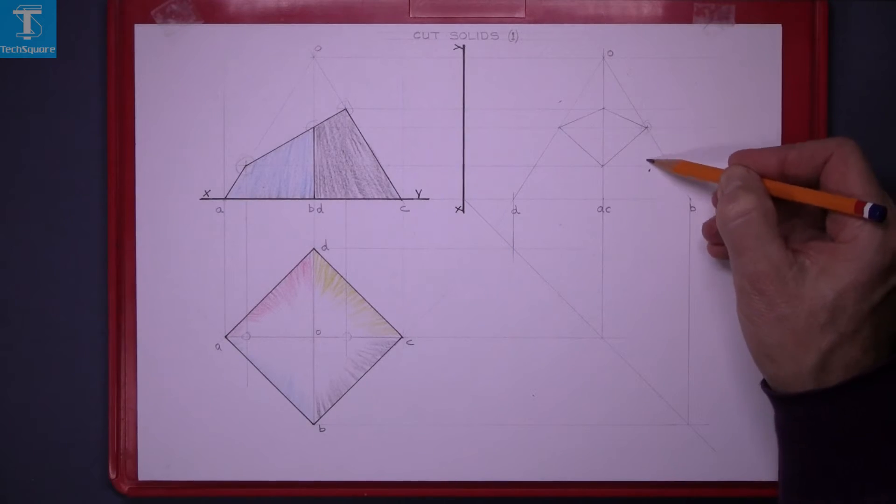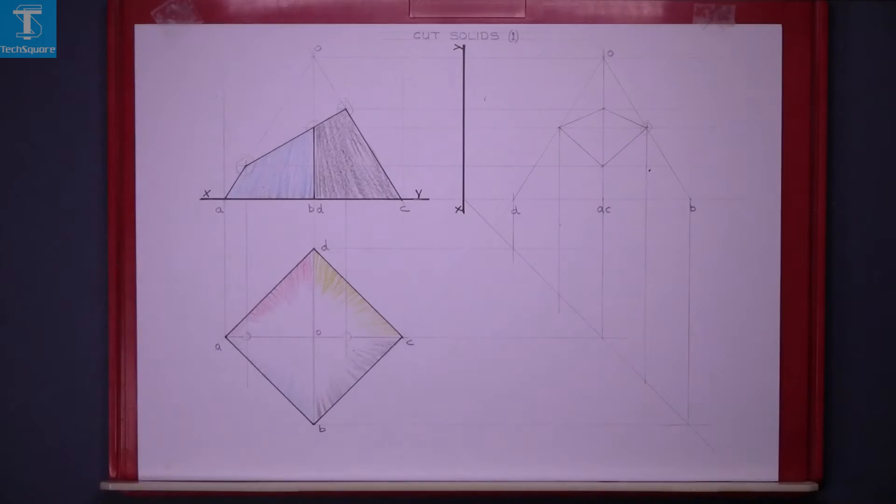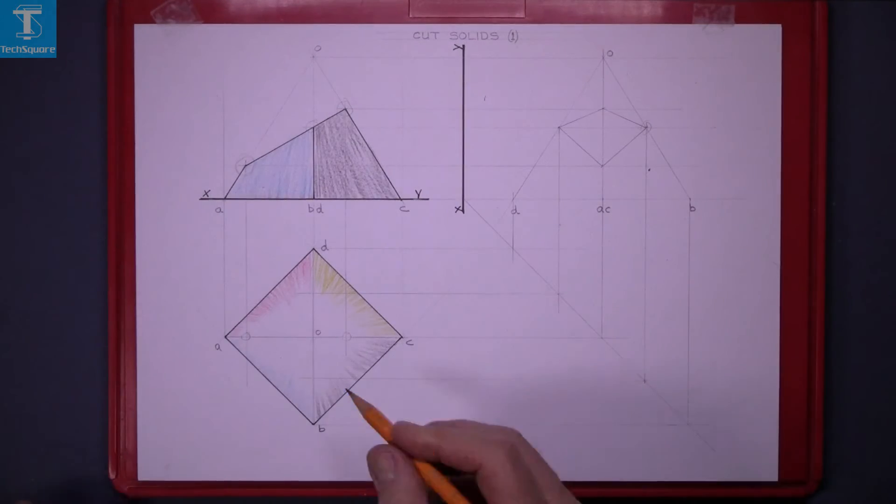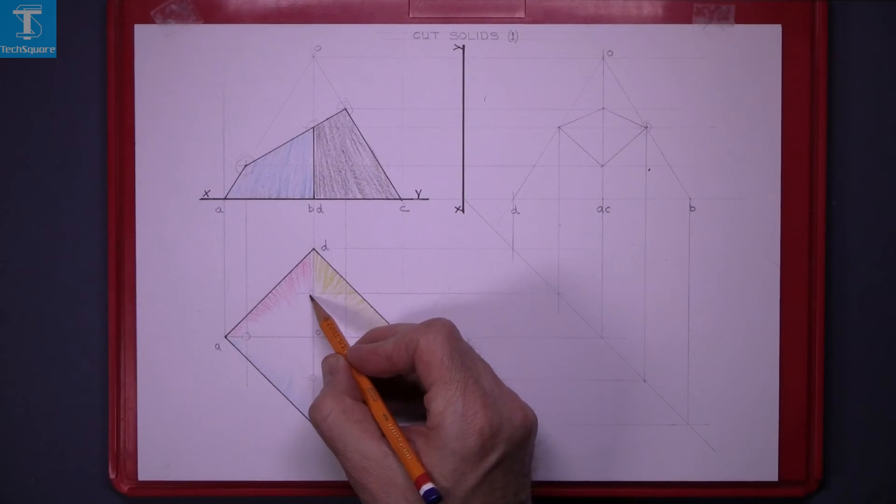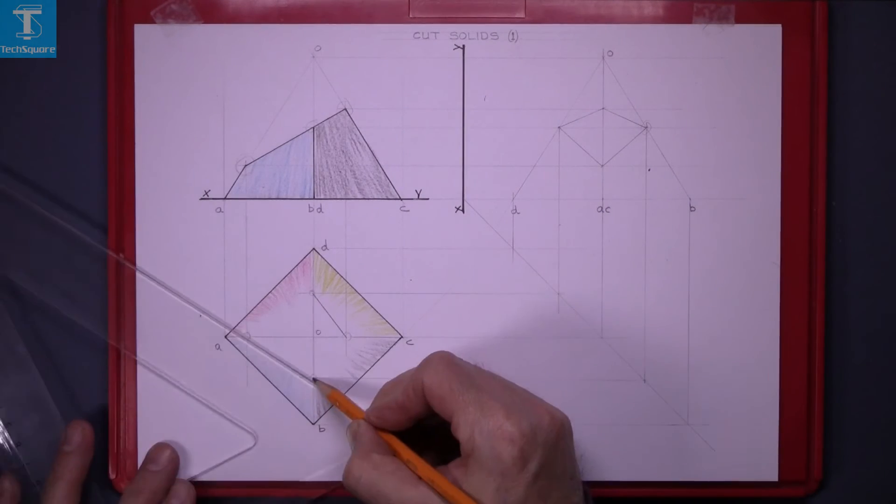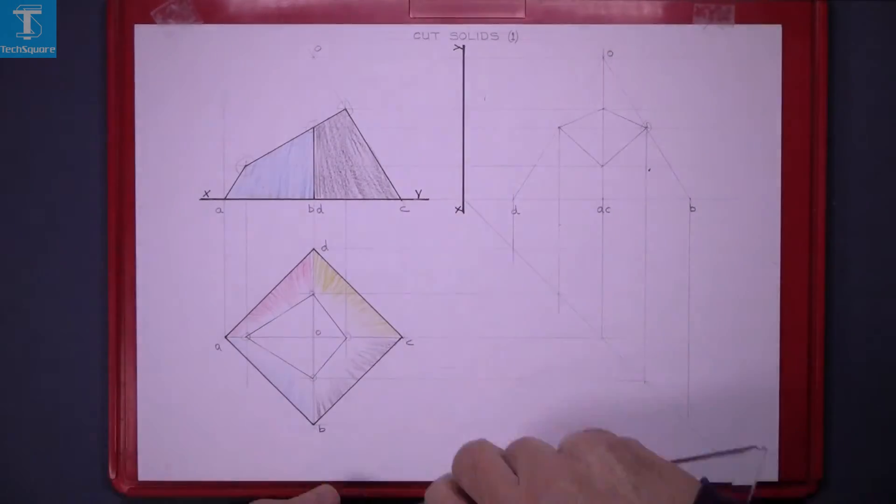Bring these points down to the plan and bring them horizontally across. Where they intersect the two lines here that gets you the two points. Now join them up with the points you have already found and that's the section in the plan.